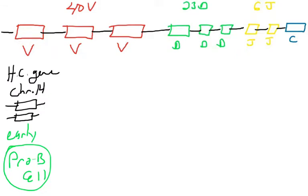Let's start with the heavy chain gene. The heavy chain gene locus, located on chromosome 14, which you have two of, the germline configuration looks like this. There are many variable gene segments, about 40, about 23 diversity gene segments, and about six joining gene segments, and then all those constant regions as well.